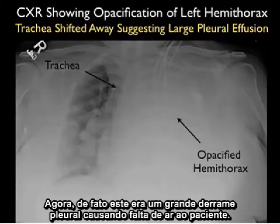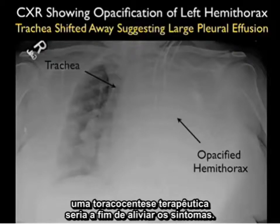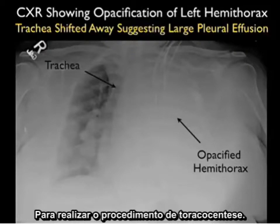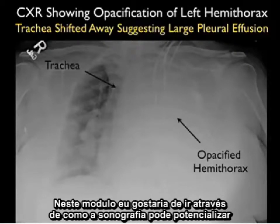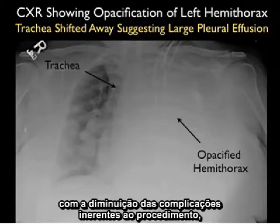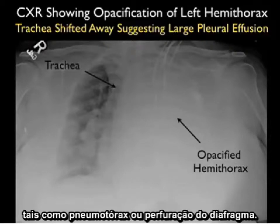Now if in fact this was a large pleural effusion causing our patient's shortness of breath, a therapeutic thoracentesis would be in order to relieve her symptoms. This leads into the topic for this Soundbites module: the use of bedside ultrasound to perform the thoracentesis procedure. In this module, I'd like to go through how sonography can potentially make the thoracentesis procedure a safer one for our patients, with a decrease in the inherent complications such as pneumothorax or perforation of the diaphragm.